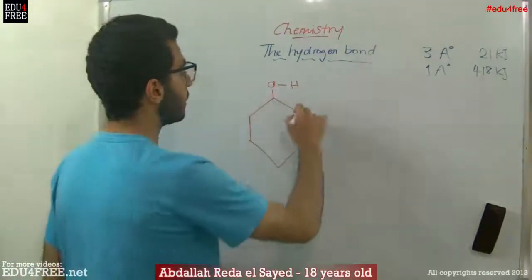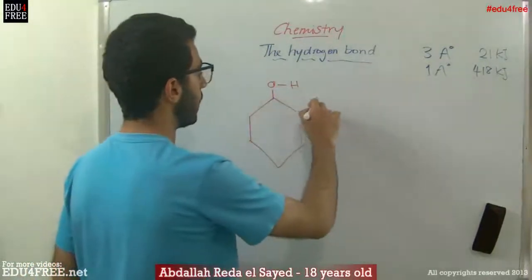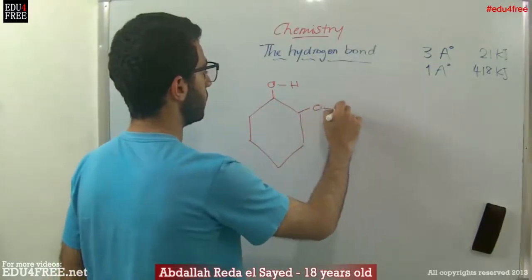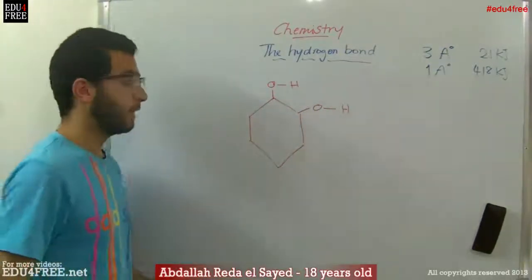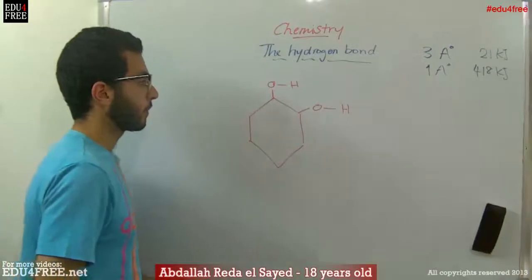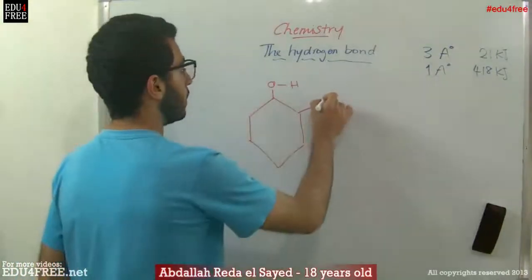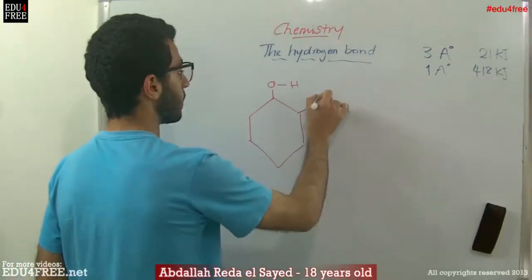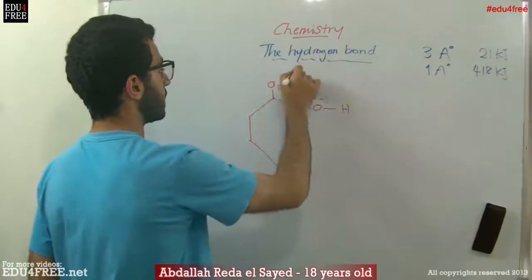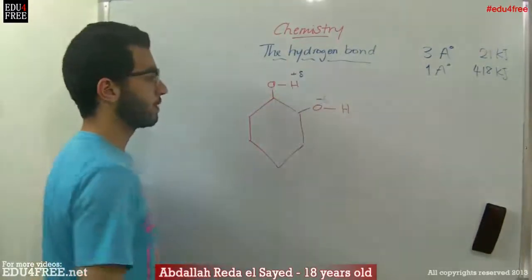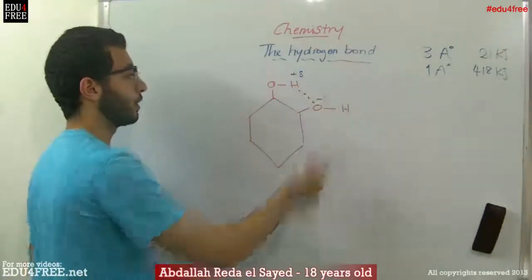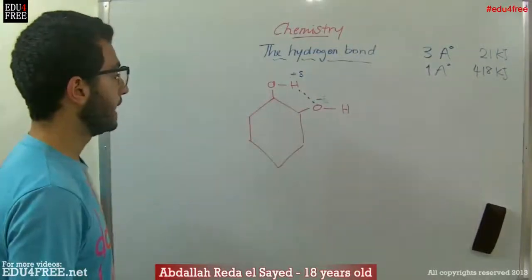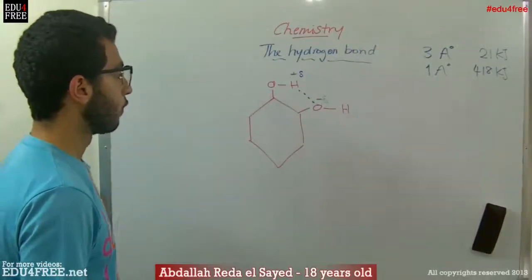If there is an OH here and another OH on the ring, the oxygen has a partial negative charge and the hydrogen has a partial positive charge, so a hydrogen bond is formed inside the molecule.